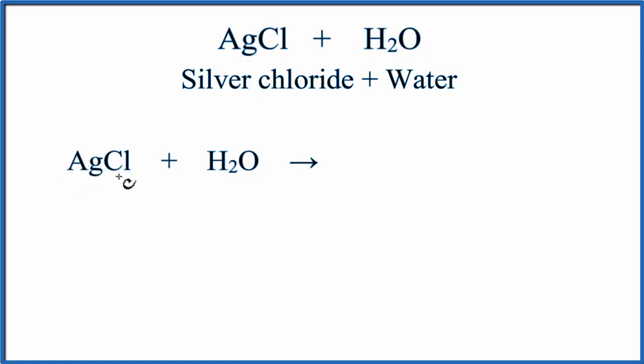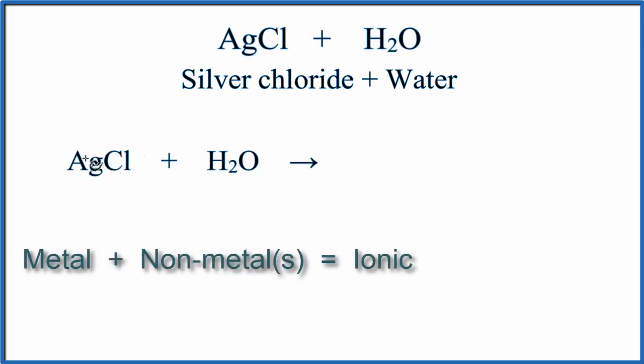Ag, silver, that's a metal, and then Cl, that's a non-metal. So this is an ionic compound. When we have an ionic compound, usually, but not always, they dissolve in water.